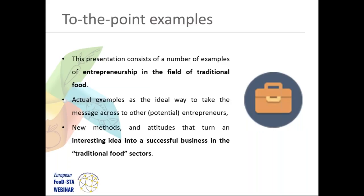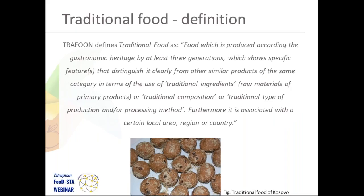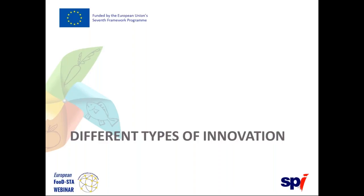This presentation consists of examples of entrepreneurship collected throughout the TRAFUN project. Presenting actual examples to entrepreneurs is the ideal way to convey what is possible in terms of new methods and attitudes that turn an interesting idea into a successful business in the traditional food sector. Traditional food is broadly defined as food produced according to the gastronomic heritage of a region, using traditional ingredients or composition methods, and often associated with a specific local area, region, or country.